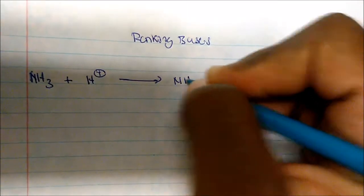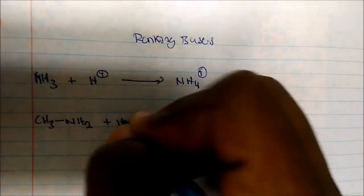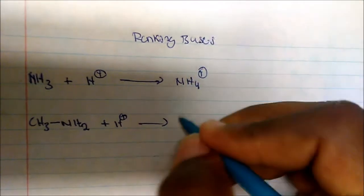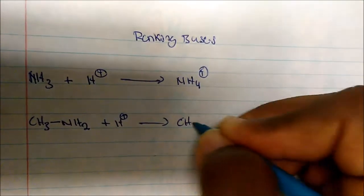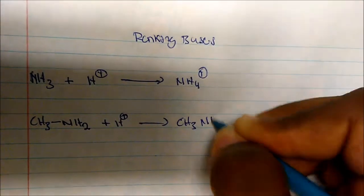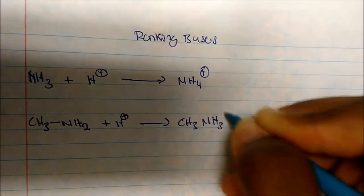If I take ammonia, which is NH3, and I add a proton, I get NH4+. If I take methylamine and add a proton, I get CH3NH3+.